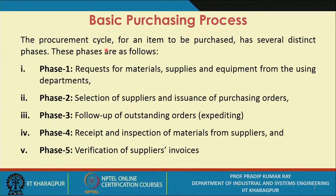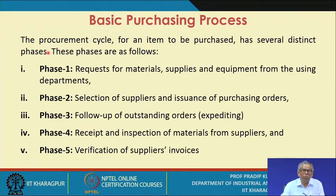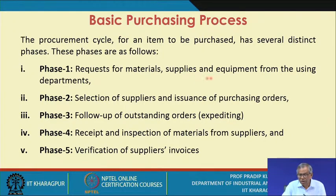The procurement cycle for an item to be purchased is the basic purpose of purchasing. The organization has several distinct phases, and you need to identify all these phases. More or less, whatever may be the item to be procured or whatever may be the type of organization, these phases are very common. In the first phase, you consider the request for materials, supplies and equipment from the using departments, as these purchase items are to be used by the using departments.